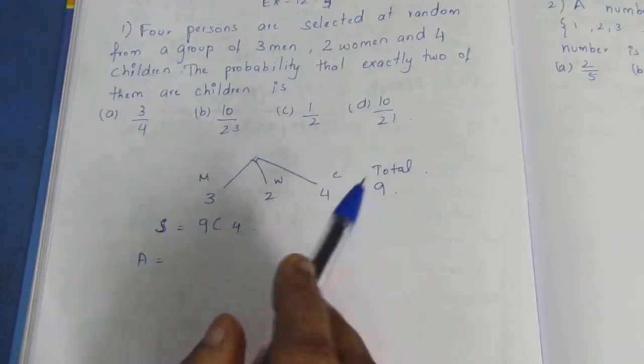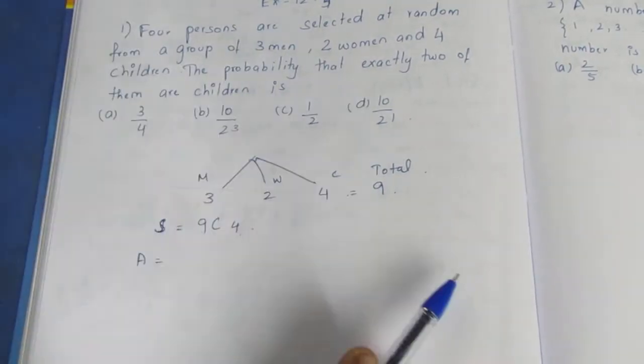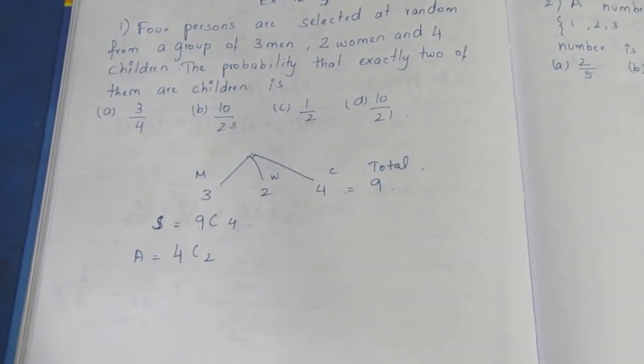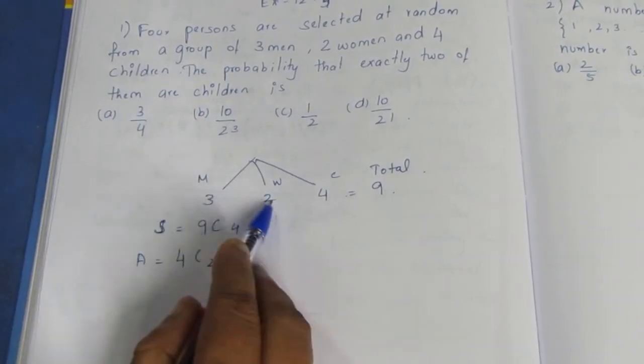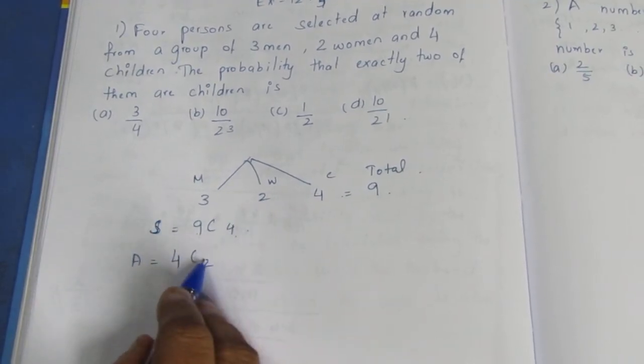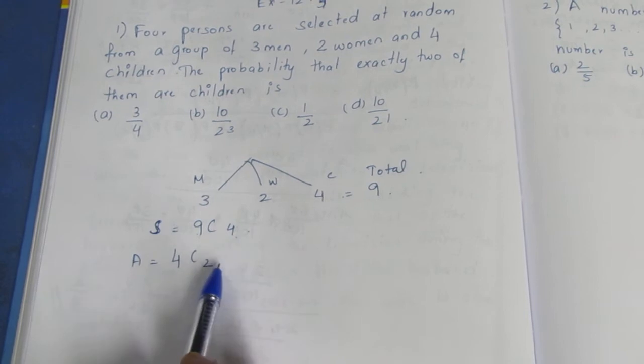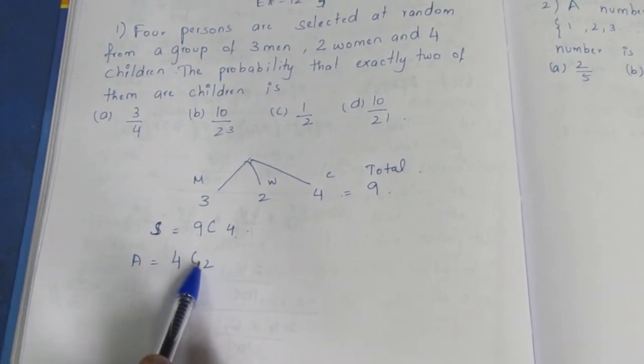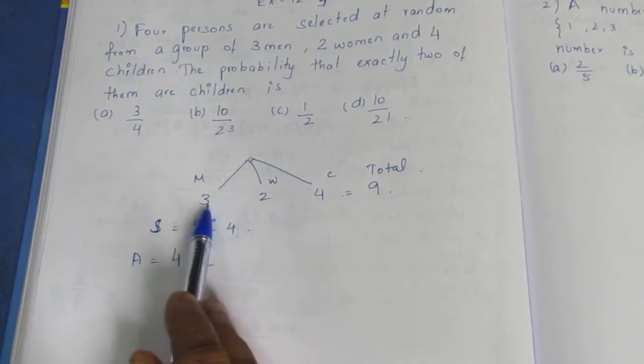In our selection, we need two children. So I choose 2 from 4 children, that's 4C2. The balance is two persons from men and women. Men and women together are 5 persons. So I choose 2 from 5, that's 5C2.